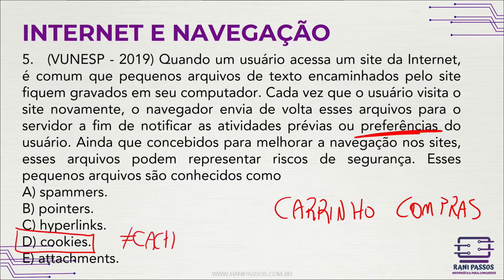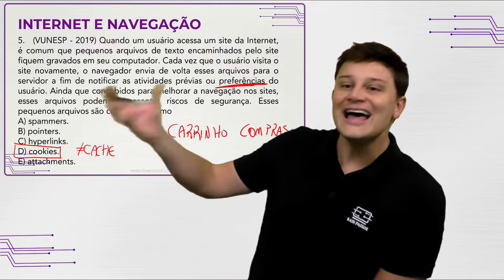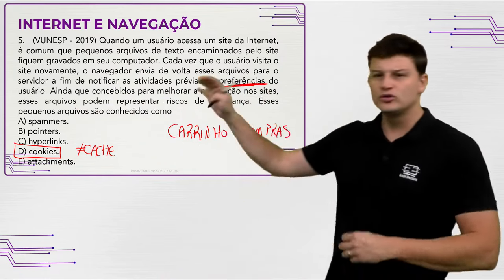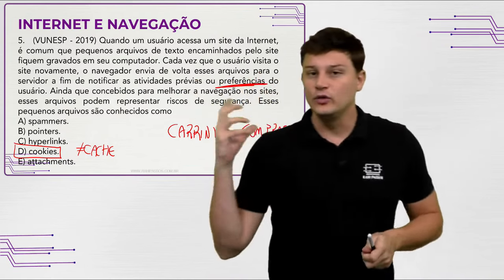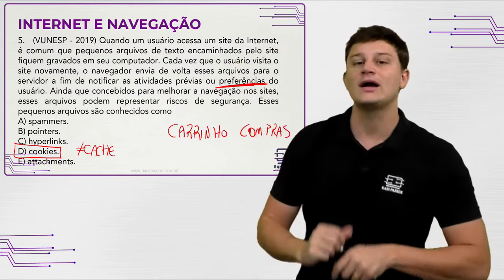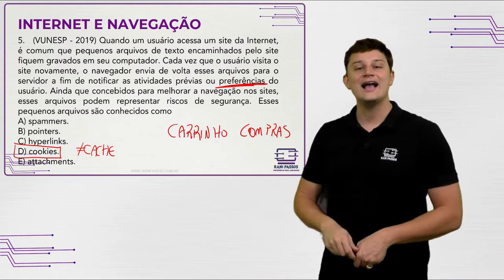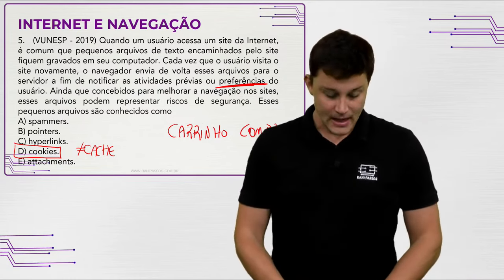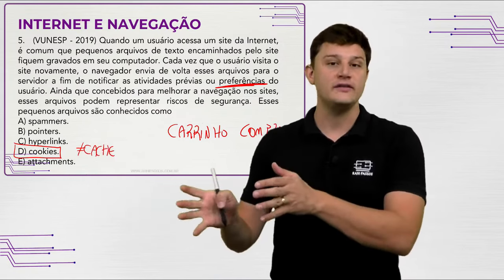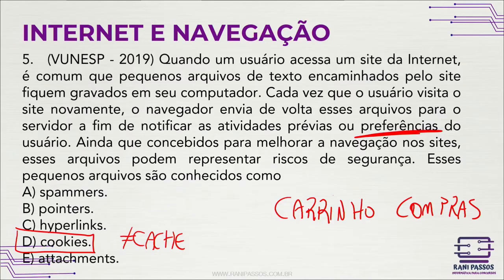Cache é diferente de cookie. Cache é o site em si — botões, imagens, texto — que fica salvo no seu HD para acelerar o carregamento. Cookie são as preferências do usuário naquele site. São coisas diferentes. Spammers, pointers, hyperlinks e attachments não correspondem ao descrito. Gabarito: letra D, cookies.